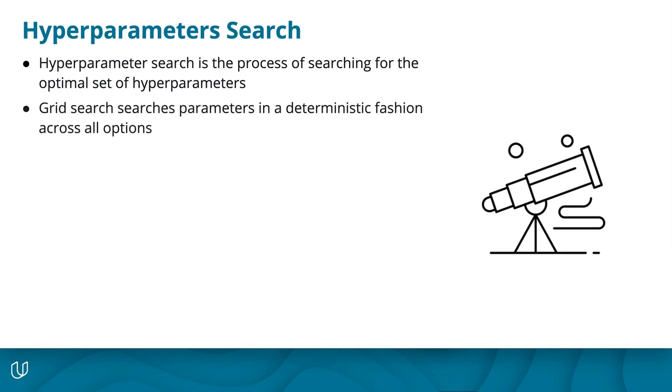First is grid search, where you search all options in a deterministic fashion. Think of using a telescope and searching the sky, moving a few degrees in the same direction every minute.